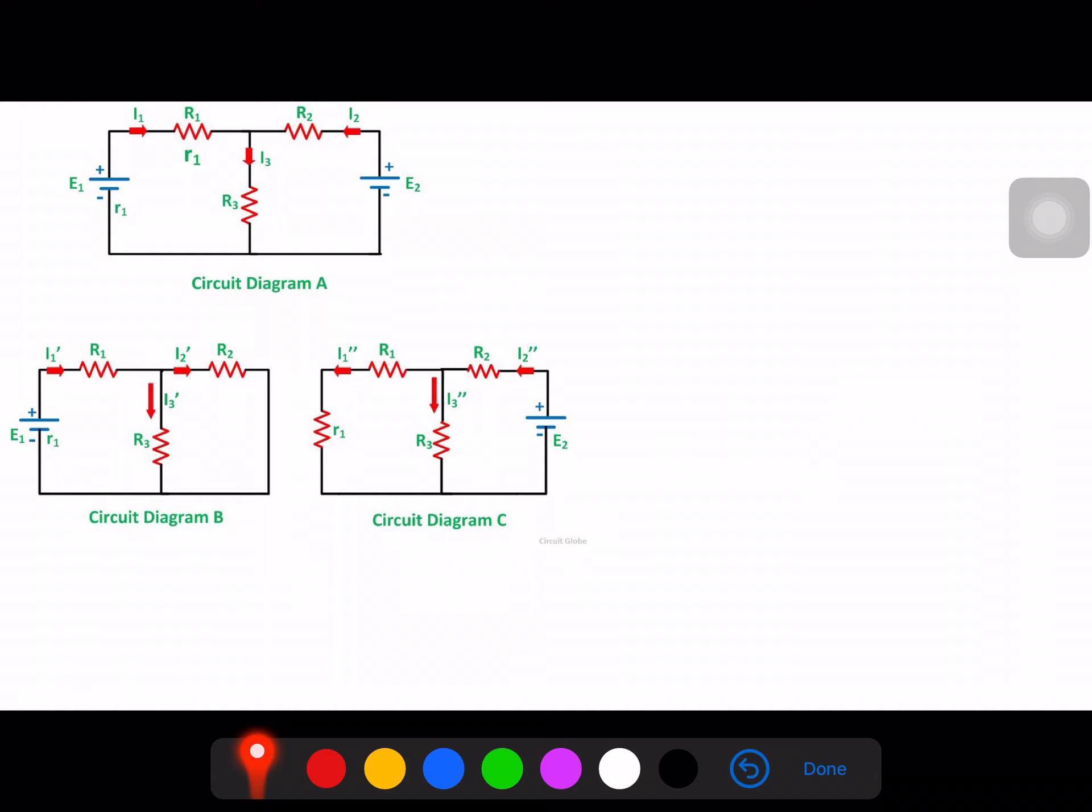Now let us consider this circuit, circuit diagram A. This is our main circuit. As you can see, we have two voltage sources E1 and E2, and we have three resistors R1, R2 and R3. We have also labelled three currents here: I1, I2 and I3.